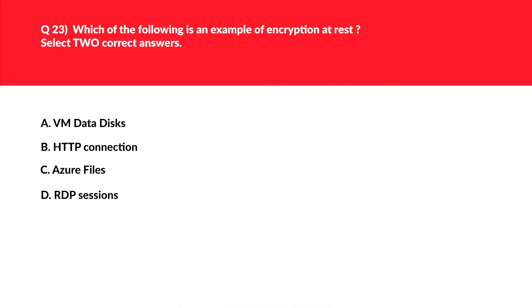If you're already into security, encryption at rest is very basic. Quick tip for the exam: whenever you see questions related to encryption at rest, storage services should strike in your mind. Let's look at option A, that is VM data disk. Since VM data disk is a storage service, we'll park this option aside as we need two correct answers. Let's look at option B, that is HTTP connection. HTTP connection uses transport layer security, also known as TLS or SSL, to encrypt communication. This seems incorrect — we'll reject this.